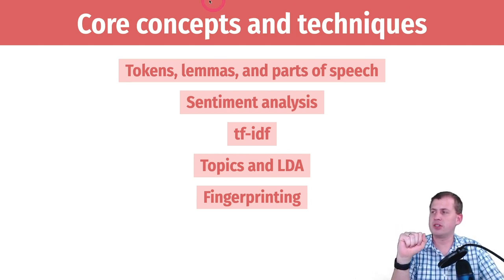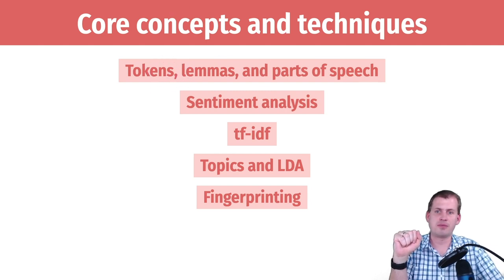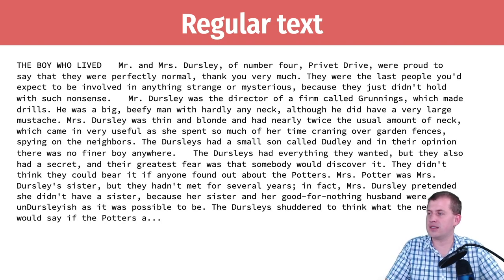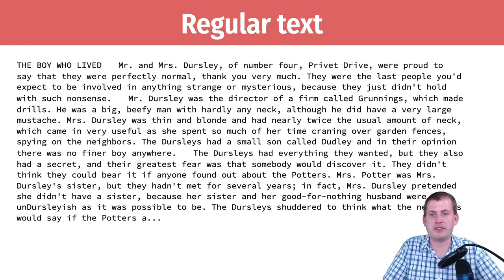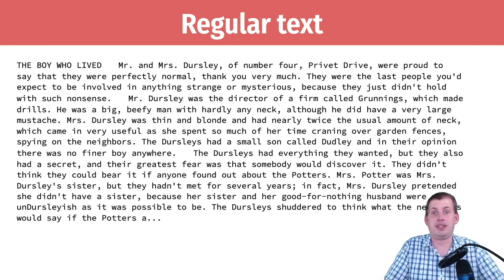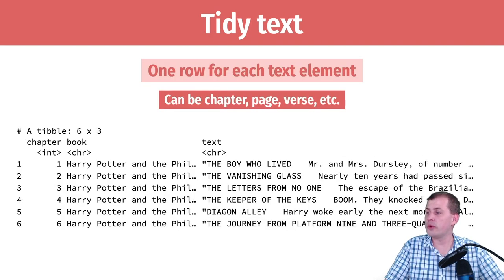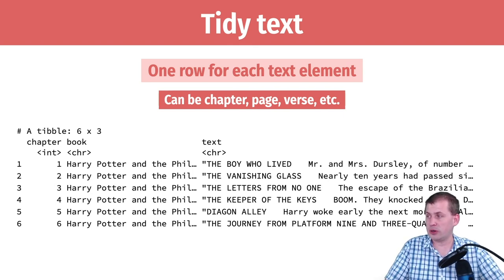Going back to the idea of tokens and lemmas — if we look at just regular text, this is the very beginning of Book One of Harry Potter. The chapter is named 'The Boy Who Lived' and then it's just text. This is not very tidy text — it's a whole bunch of text in a file. Tidy text would have one row for every text element, and in this case there's a row for each chapter.